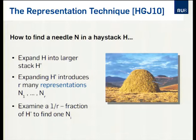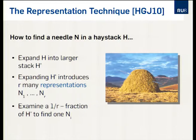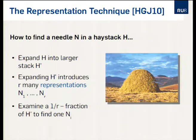Assume that you are given a very large haystack H, and there's a tiny little needle somewhere hidden in this haystack, and your task is to find this particular needle. At EuroCrypt 2010, Howgrave-Graham and Antoine Joux presented a method — a general strategy to solve such a problem — which I call the representation technique. Assume you have a way to expand the small haystack into an even larger haystack, and while you do this expansion, you implicitly introduce a certain number of copies of the originally unique needle. At the end, it might be sufficient to consider only a 1/R fraction of the expanded haystack, simply because you could hope that one of the copies can be found in this particular fraction.